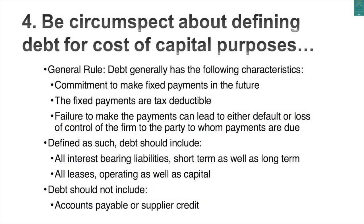The last step is deciding what to subtract out to get to equity value. Subtract out all interest-bearing debt and lease commitments — the same items you treat as debt in the cost of capital calculation. This is also your last chance to mop up for anything else that might concern you. For example, if you have a tobacco company, you might worry about lawsuits. You need to take the expected value of those lawsuit losses and subtract them from the value of equity. Not easy to do, but there's no way around it.